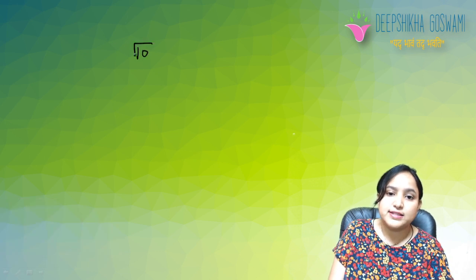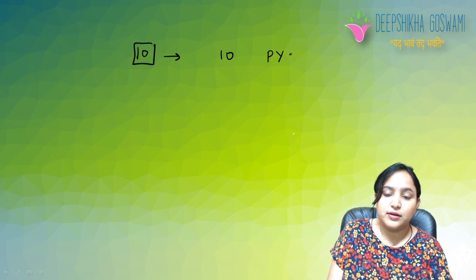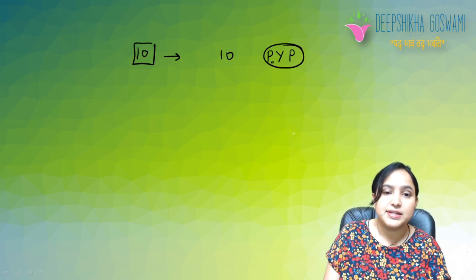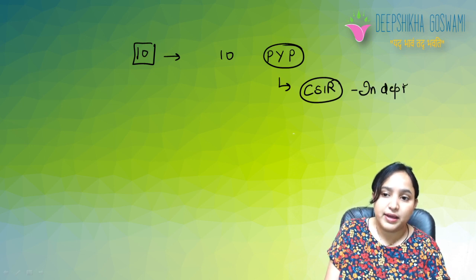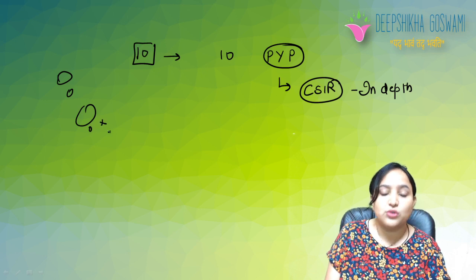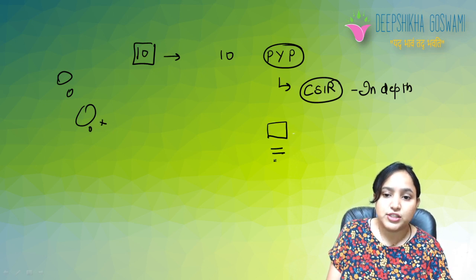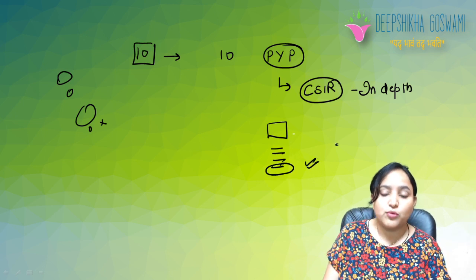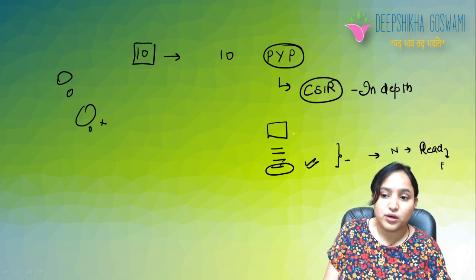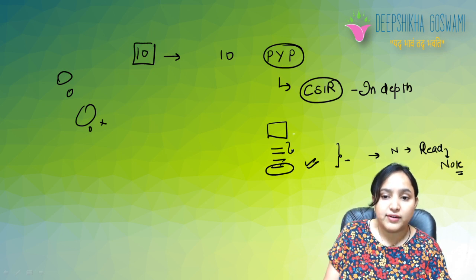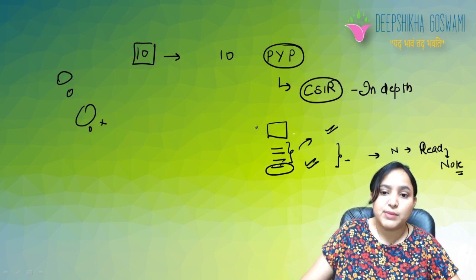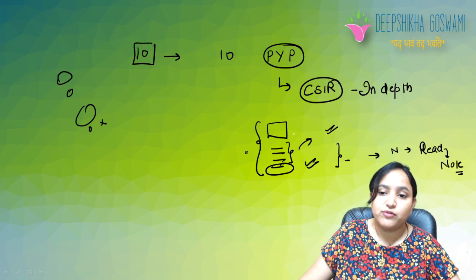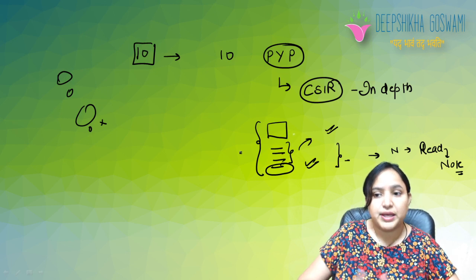The Rule of 10 is very simple: solve 10 years of previous year papers. Whether you have some exam, you need to do it in an in-depth manner, in detail. You need to read about each topic, make notes for it, and then revisit and study it thoroughly. This is the Rule of 10.